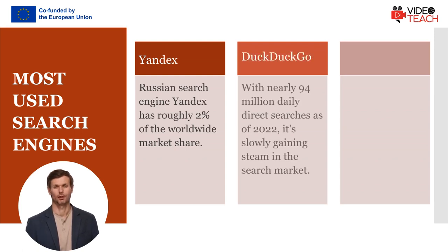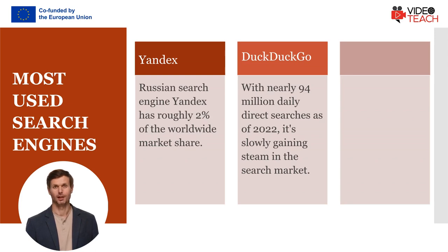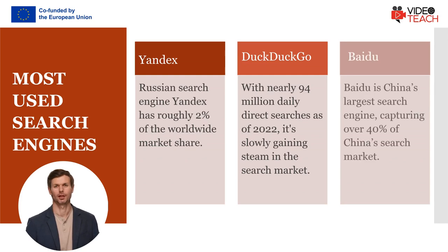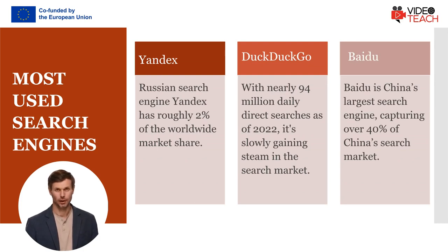Fifth, DuckDuckGo, which doesn't track, collect, or store any information about you, so you don't have to be afraid of ads. It's worth noting there are still ads on DuckDuckGo, just not personalized ones. With nearly 94 million daily direct searches as of 2022, it's slowly gaining steam in the search market. Sixth, China's largest search engine, Baidu, capturing over 40% of China's search market. Baidu looks similar to Google — besides being in Mandarin — with a white background, blue links, and green URLs. However, the search engine censors certain images and blocks pro-democracy websites.